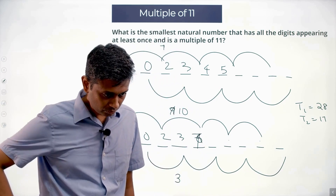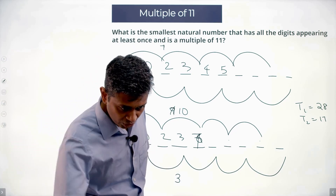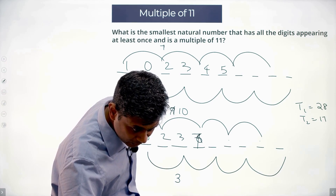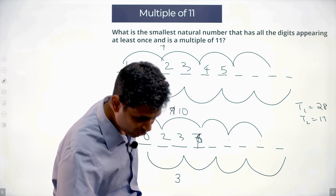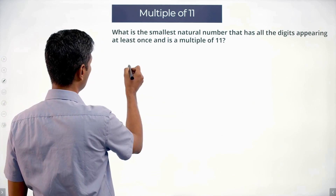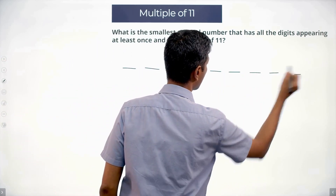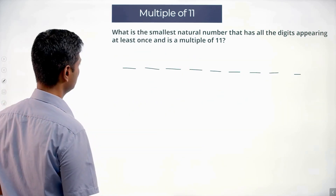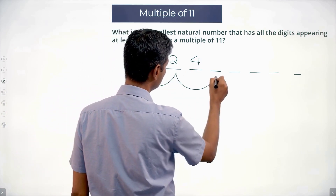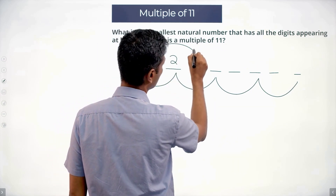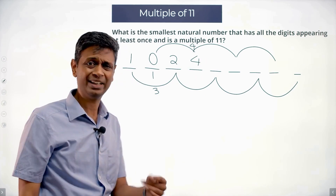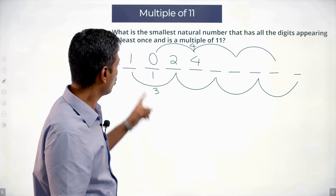I'll have a look at the chat window to see whether anyone has already found the answer. Some of you are already jumping with joy — but it's a super tough question. Starting with 1, 0, 2, 3 doesn't seem to work. So let me try starting with 1, 0, 2, 4.